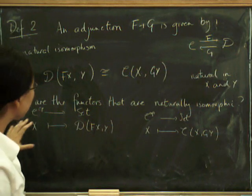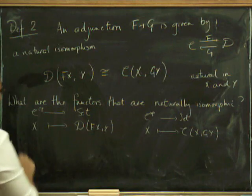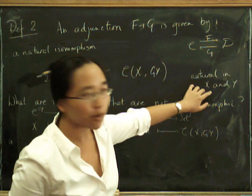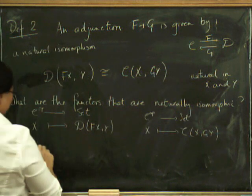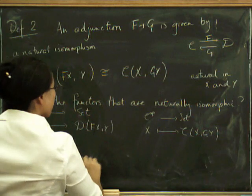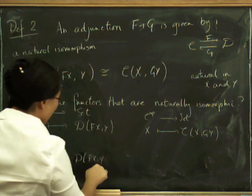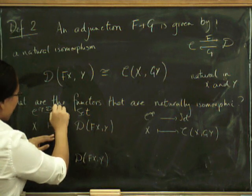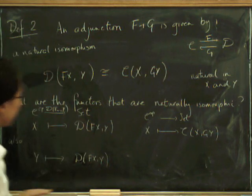So this is a functor from C op to Set as well, and since they're both functors from C op to Set it makes perfect sense to ask for them to be naturally isomorphic. On the other hand, we fixed the Y. There are actually two natural isomorphisms, that's why I've said natural in X and Y. Really there are two naturality conditions going on here.